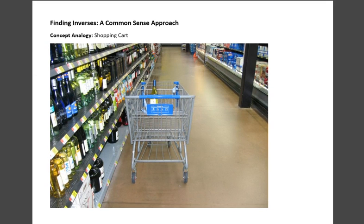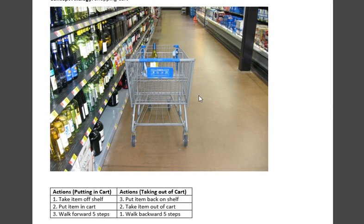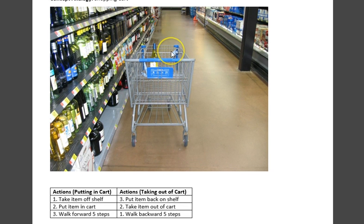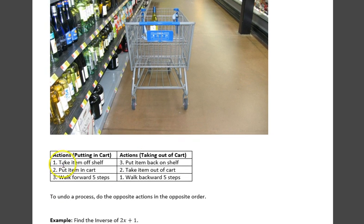Finding inverses, a common sense approach. We're going to use this analogy of a shopping cart. Suppose you're shopping, and you select some wine off the shelf, put it in your cart, and then walk five steps forward. We see here in this table, you take the item off the shelf, you put it in the cart, and then you walk forward five steps. That's the actions of putting it in the cart, one, two, and three.